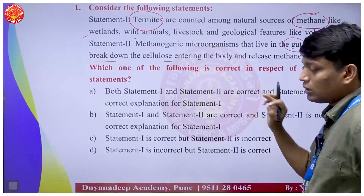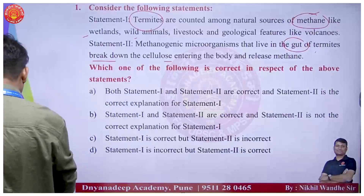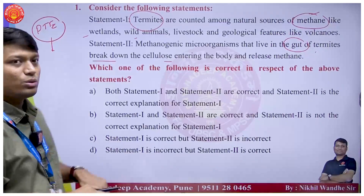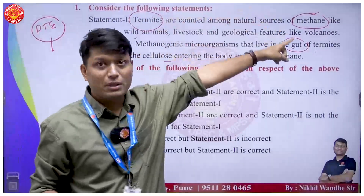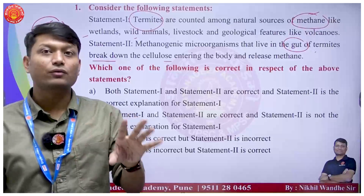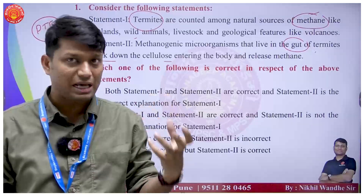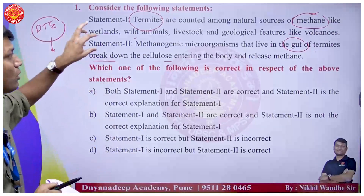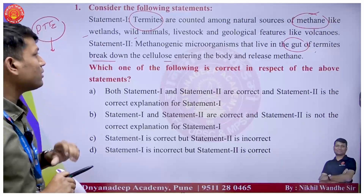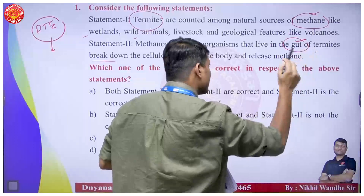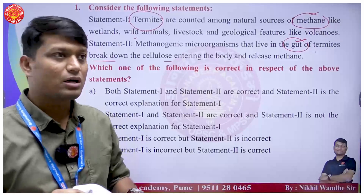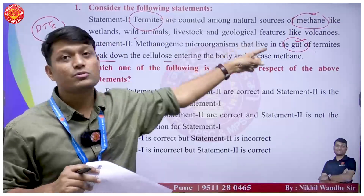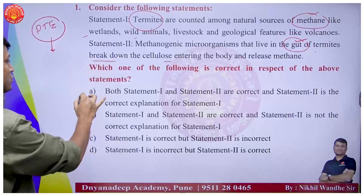This is a current affairs-based environment question. There was an article in Down to Earth which explained how termites are one of the sources of methane. Termites play the role of a decomposer in the ecosystem. The reason for methane release is that within the gut of termites there are bacteria, and those bacteria are responsible for the release of methane.